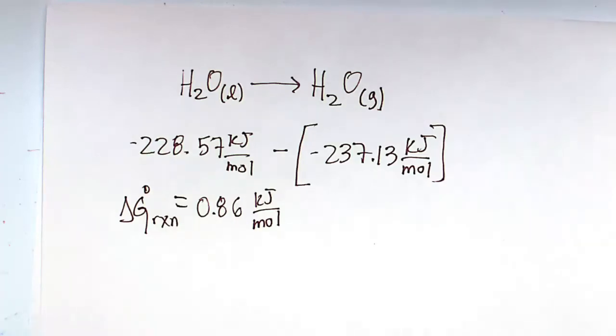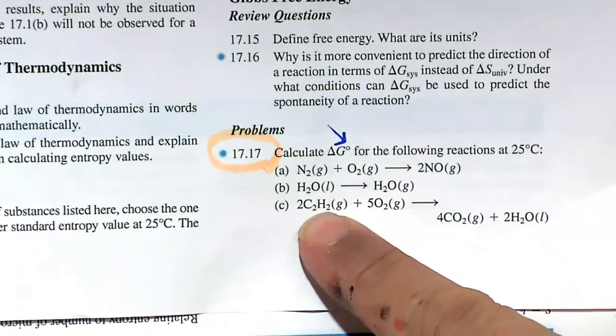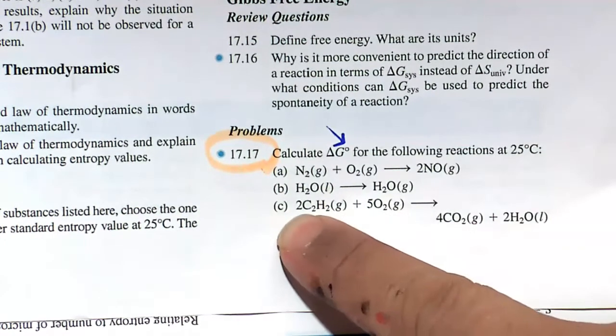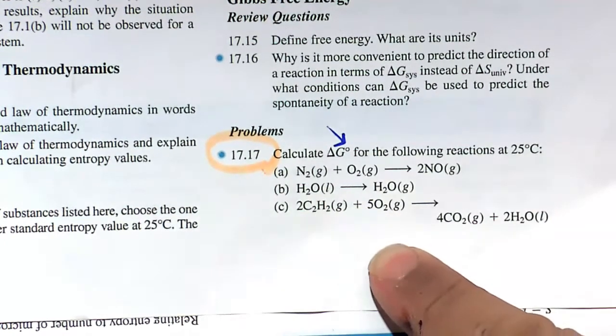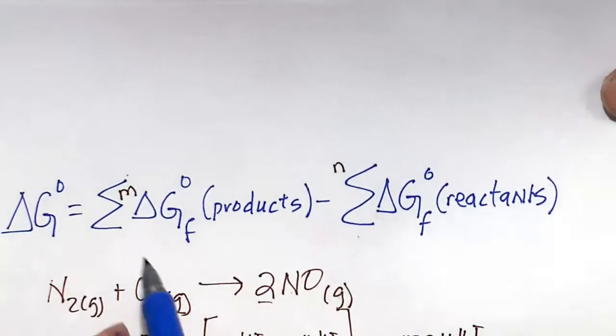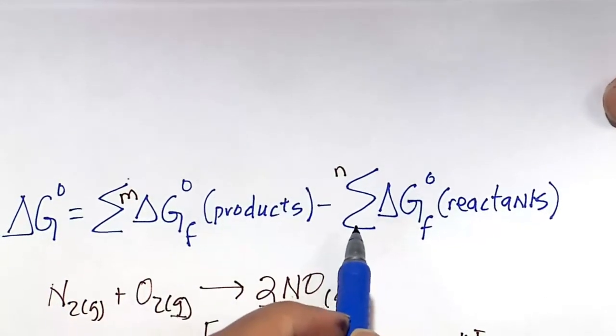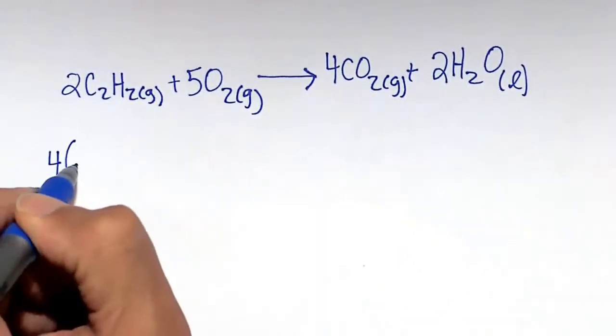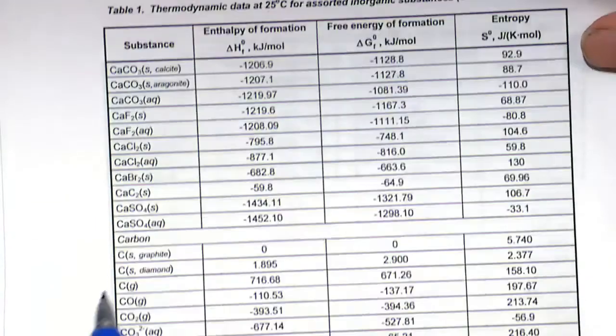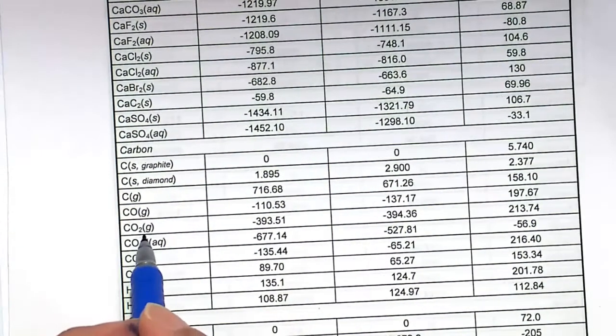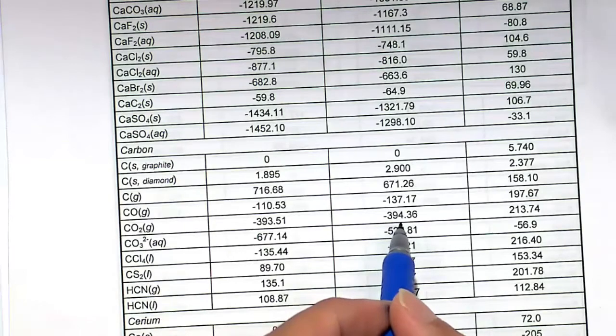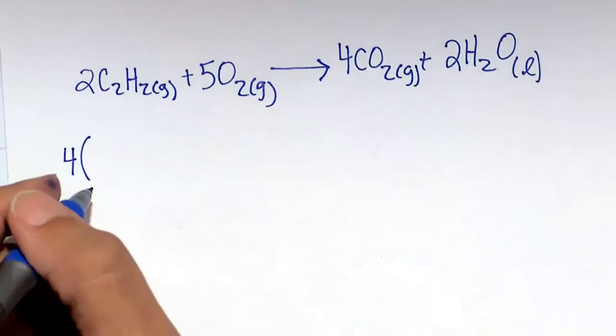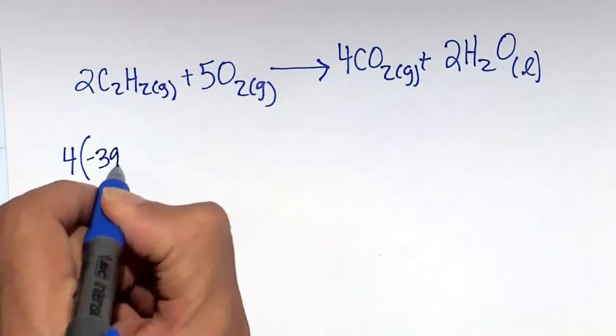Finally, let's look at part C. Part C looks to be a combustion reaction. We've got a lot of coefficients here, so we've got to multiply each of these values we get from the table by the corresponding stoichiometric coefficient. We want to remind ourselves of the formula here. Sum of the products minus sum of the reactants. So let's start with our products first. 4 times CO2 gas. So let's look that value up on our table. For the delta G for CO2 gas, I'm getting minus 394.36. I'm going to multiply that by 4, remember now, because that's for 1 mole.